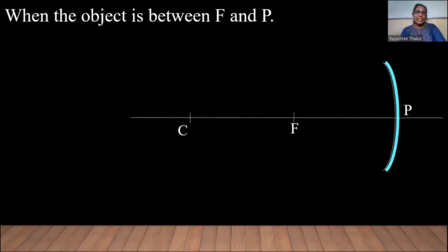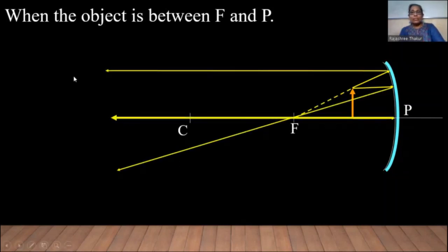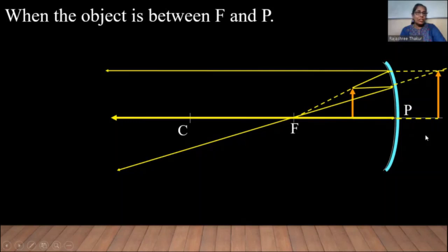When the rays are incident on the mirror, they get reflected. If we observe these reflected rays from here, it appears as if they are coming from behind the mirror — from what we call the image, behind the mirror. You can see this image is erect and enlarged, but it is not inverted and real. It cannot be taken on the screen, but it can be observed — it appears to be behind the mirror.